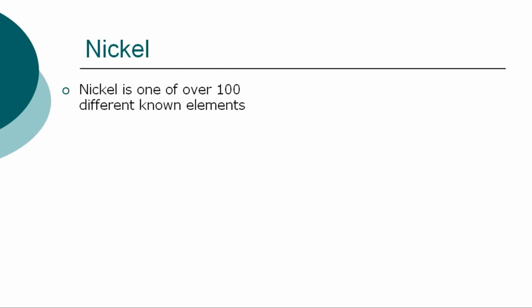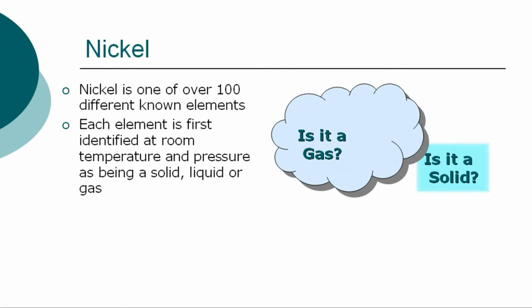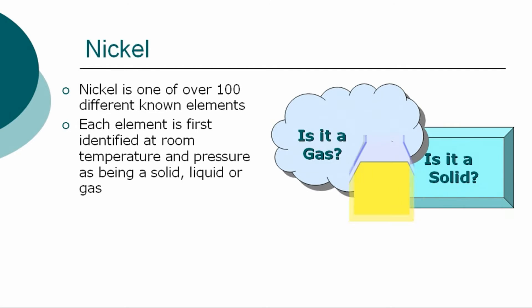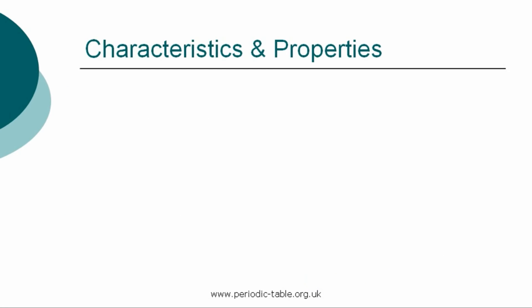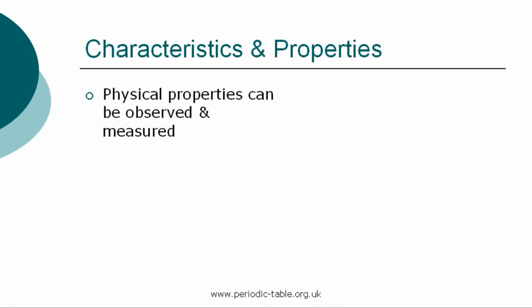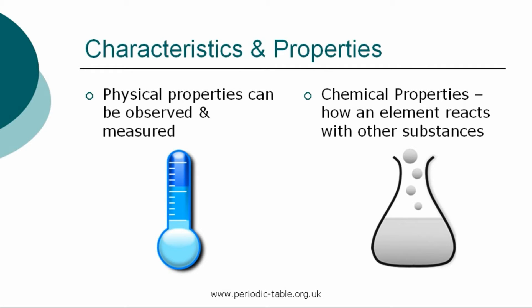The element nickel is one of over 100 different chemical elements known to modern chemistry. Each element is first identified at room temperature and pressure as being a solid, liquid, or gas, referred to as states of matter. Nickel is a solid at normal room temperature and pressure. Each element has physical properties that can be observed and measured, such as color, density, and odor. The chemical properties are the characteristics that determine how a substance will react with other substances, such as water or oxygen.